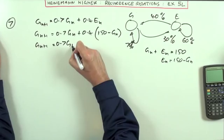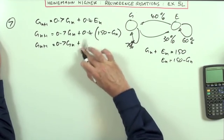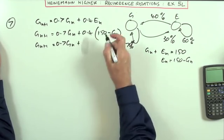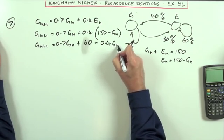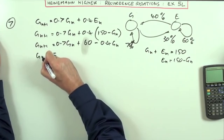So G_n+1 will be, you can see the answer already staring in the face, but I'll have to write this all out. I should have just done my 0.4 times that, which is 60, minus 0.4 G_n, and then putting those two bits together,